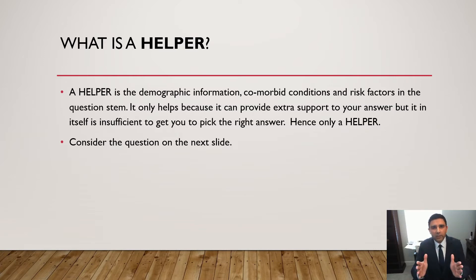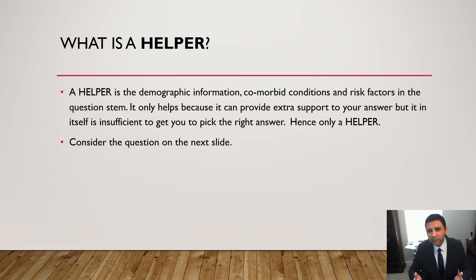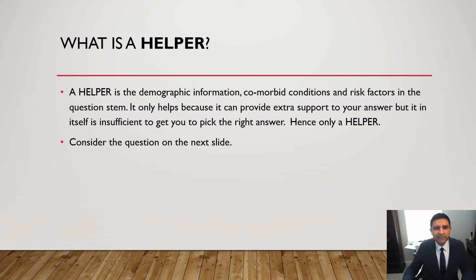First, we're going to talk about the helper. What is the helper? A helper is the demographic information — age, sex, and ethnicity — which are the three most common components of demographic information you'll be provided with — as well as comorbid conditions and risk factors in the question stem. I call it a helper because it only helps; it can provide extra support to your answer, but a helper in itself is insufficient to get you to pick the right answer. That's why it's only a helper.